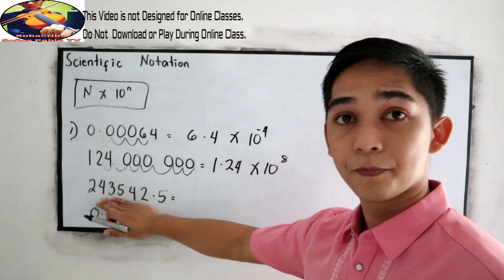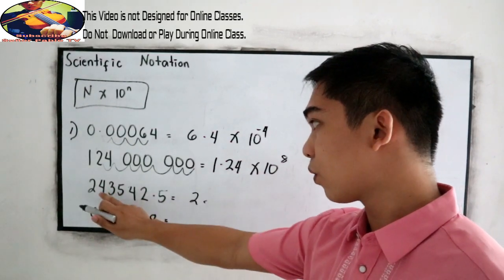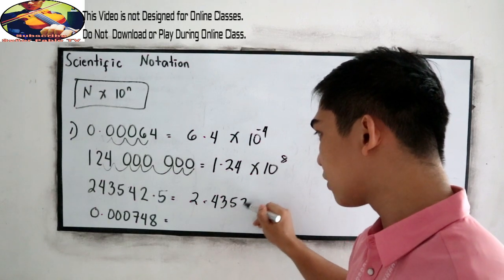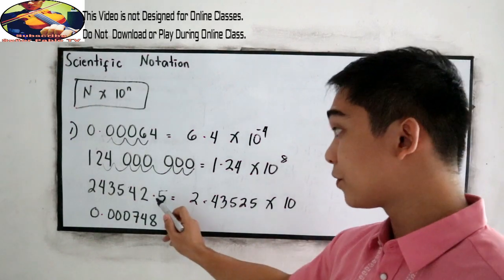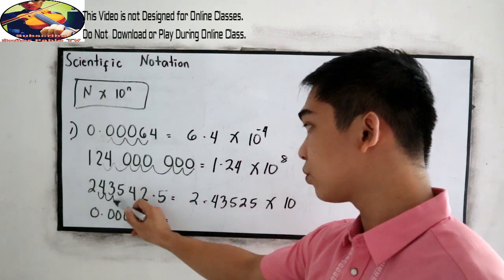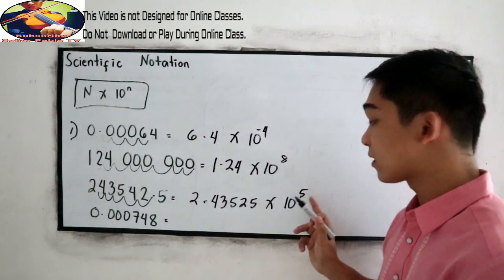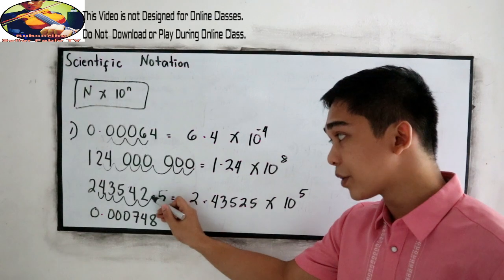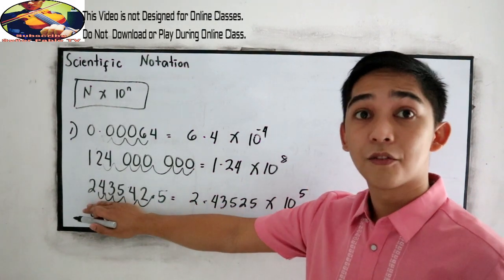And this one. This will become 2.43525 times 10. Move the decimal point 1, 2, 3, 4, 5. Raised to 5. Positive 5 because our decimal point is here. And we know that this number has a large volume.